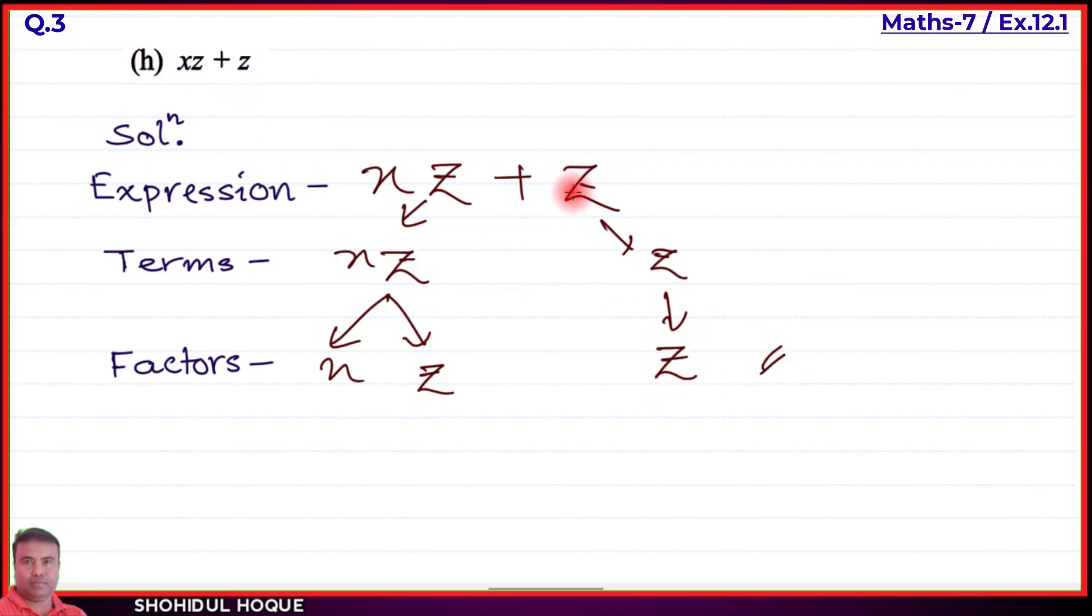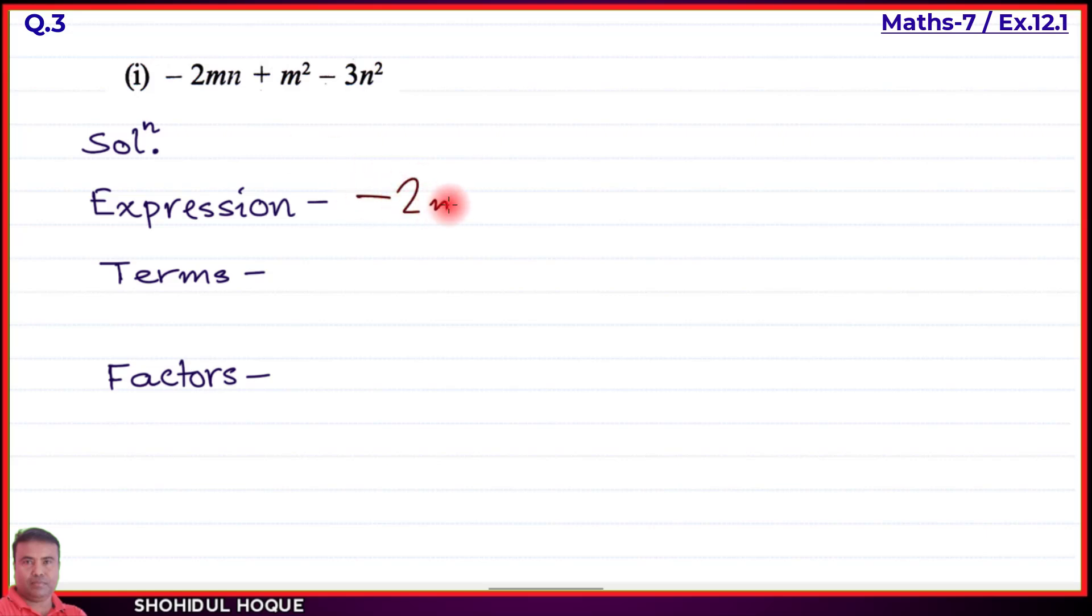Part (i): the expression is -2mn + m² - 3n². The three terms are -2mn, m², and -3n². The first term has factors -2, m, and n.